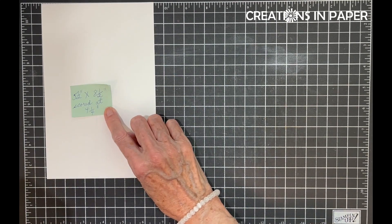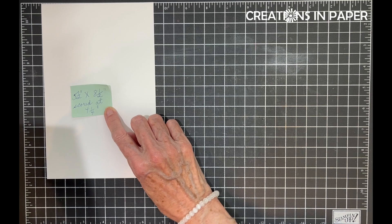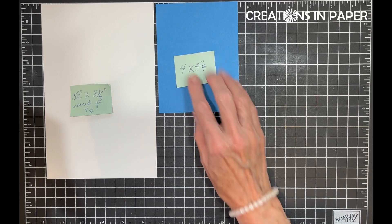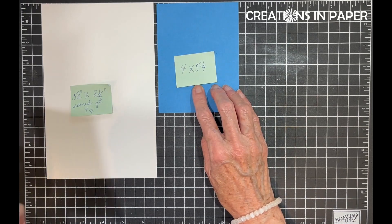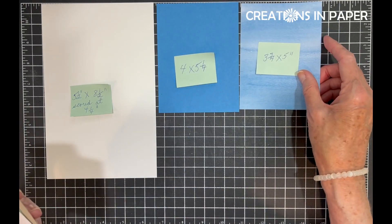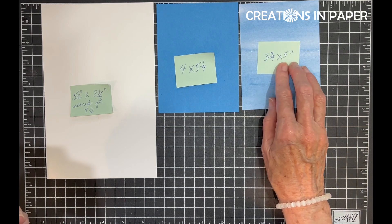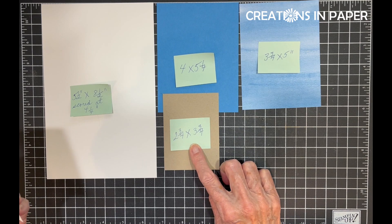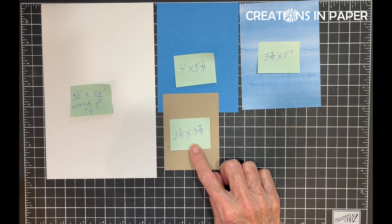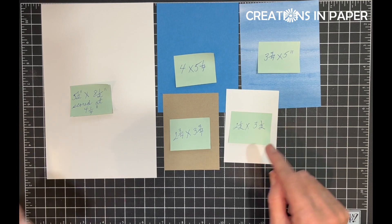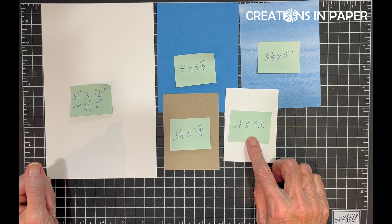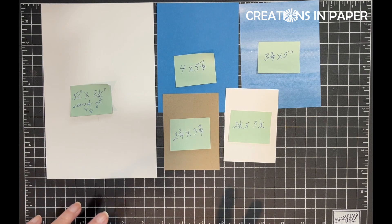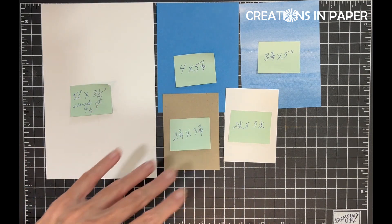...a piece of white that's 5.5 by 8.5 inches scored at 4.25, a piece of Azure Afternoon that's 4 by 5.25, a piece of the Bright and Beautiful DSP that's 3.75 by 5, a piece of Crumb Cake that's 2.75 by 3.75, and a piece of white that's 2.5 by 3.5. Pause the camera, take your picture, and let's craft together.